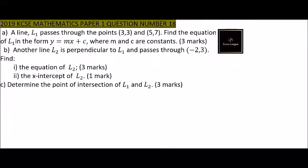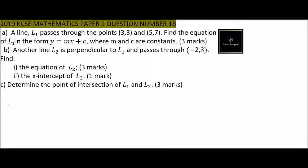Question number 18: we are told a line L1 passes through the points (3, 3) and (5, 7). Find the equation of line L1 in the form y = mx + c, where m and c are constants.